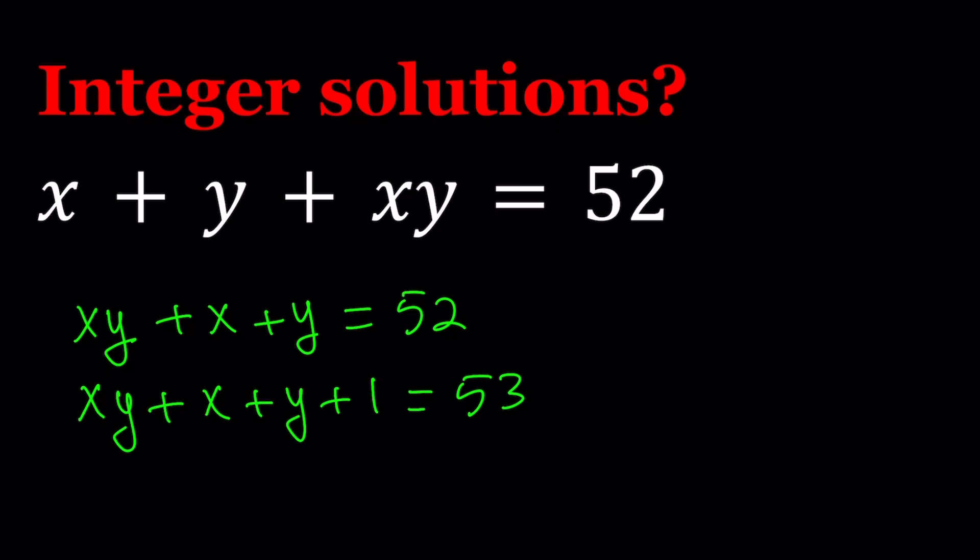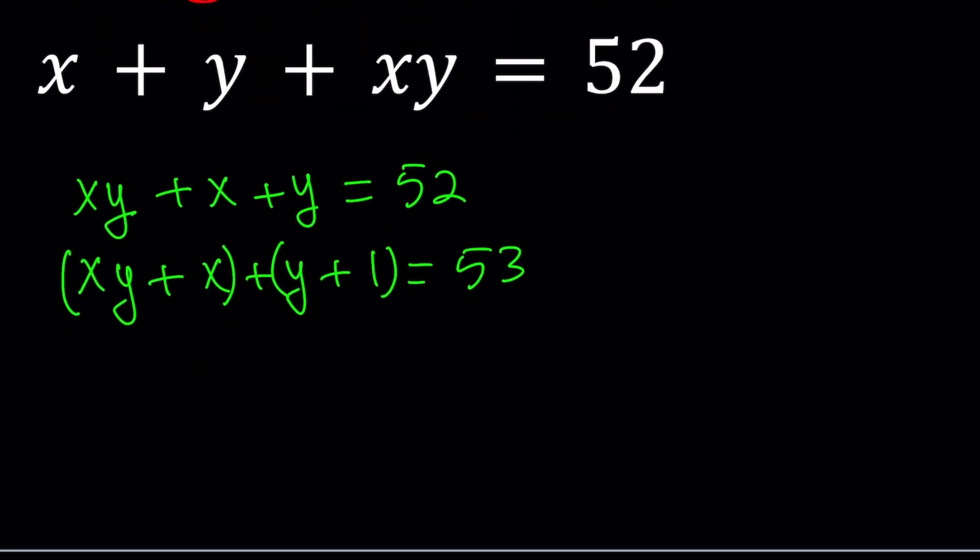And then we're going to factor this by grouping. Two groups, take out x, y plus 1. And for y and 1, the only common factor or the greatest common factor is just 1. So we're going to take out a 1. You don't have to write it, but it's better if you do. 53.